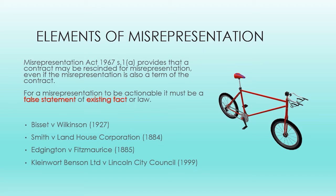Two exceptions exist to this. The first is where the person expressing the opinion is aware of facts which indicate that the opinion cannot be sustained. See Smith v. Landhouse Corporation from 1884. The second exception, which can lead to a statement of opinion being treated as a false statement of fact, is where there is evidence that the person making the statement does not believe it at the time it is made. Proof that the maker of the statement was aware of contradictory facts may prove that they did not believe the statement was true. See Edgington v. Fitzmaurice from 1885.